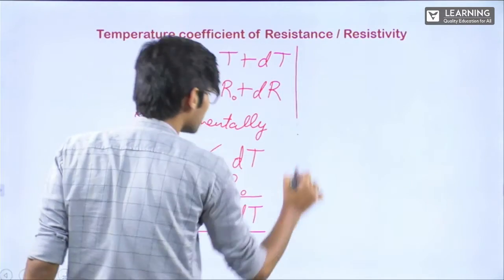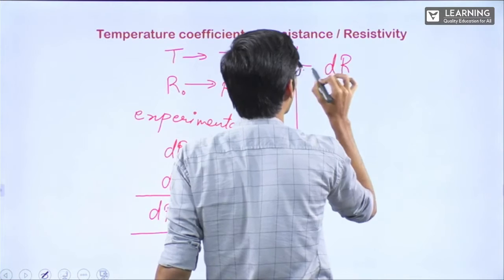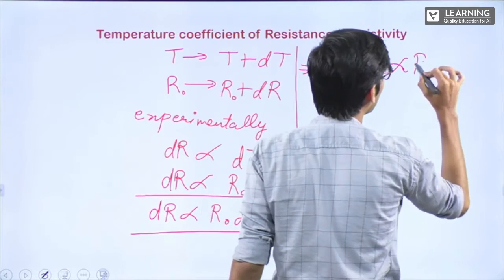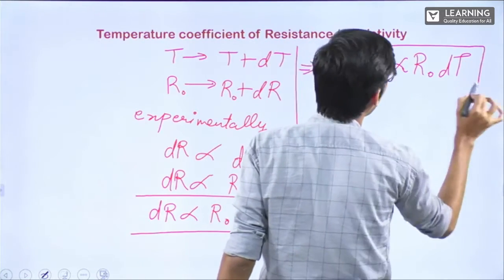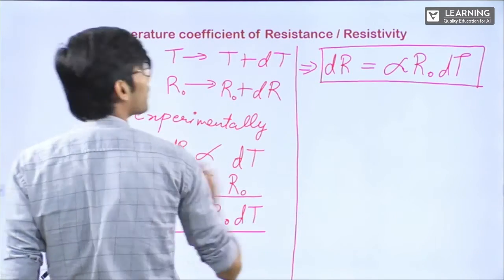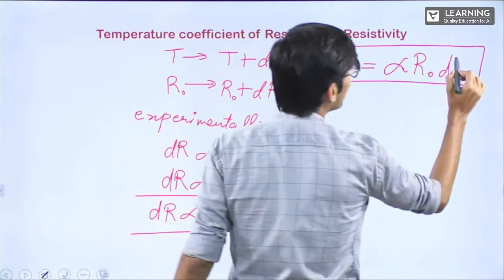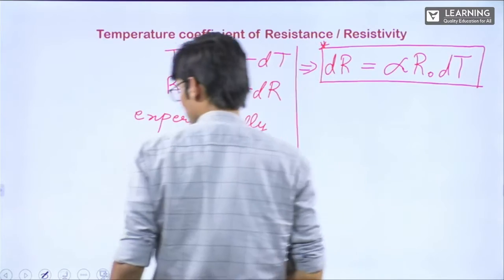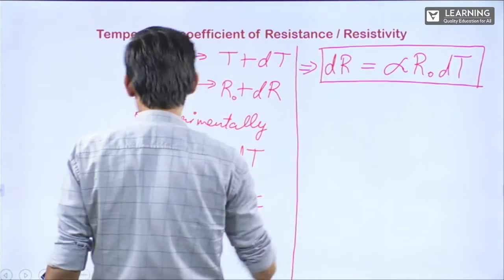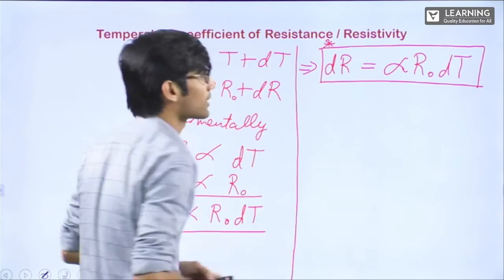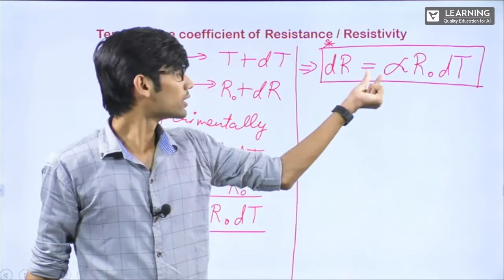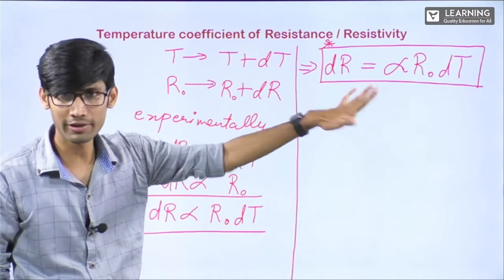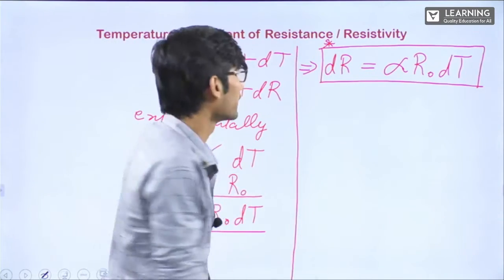From this proportionality, we write: dR = α R₀ dT, where α is the proportionality constant — the temperature coefficient. This formula is very important. This formula is not in your NCERT; they have directly given one formula. But this formula is important for people preparing for competitions. This α is constant 99% of the time — in boards, in NCERT examples, in all those questions, α is treated as constant.